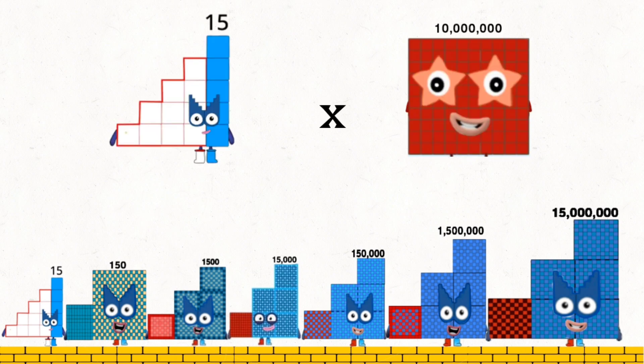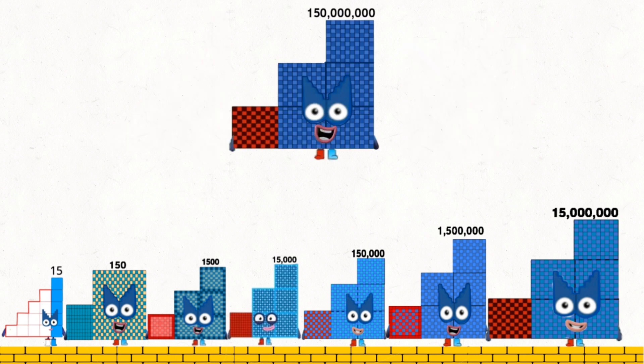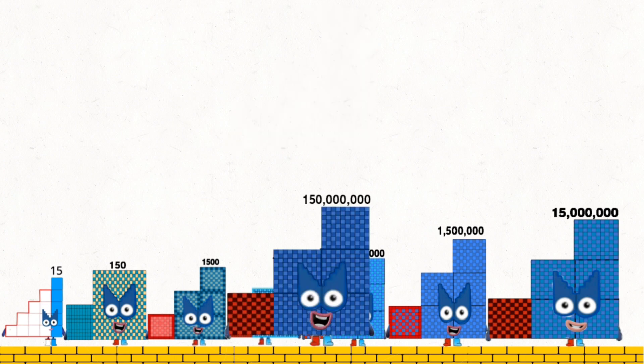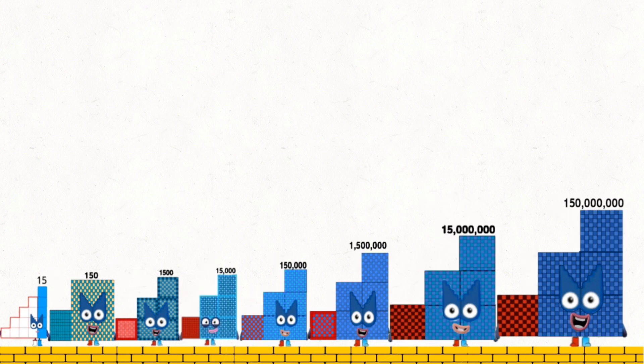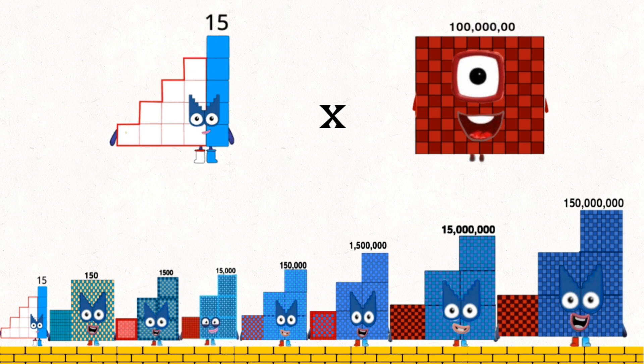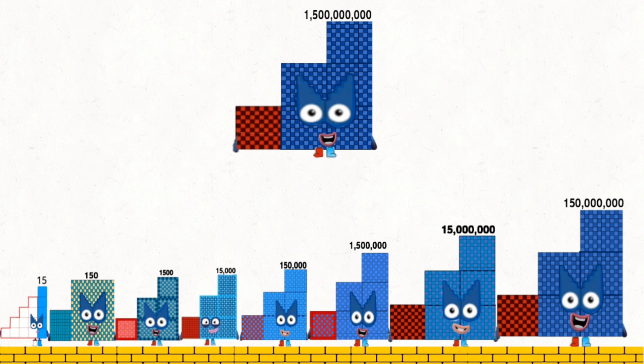15 times 10,000,000 equals 150,000,000. 15 times 100,000,000 equals 1,500,000,000.